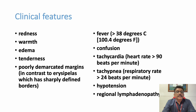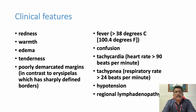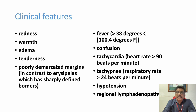Clinical features of cellulitis include redness, warmth, edema, tenderness, and poorly demarcated margins — in contrast to erysipelas, which has sharply defined borders. As infection spreads deeper, border demarcation becomes faint. Systemically, patients can have high-grade fever, confusion from toxic encephalopathy, tachycardia, tachypnea, lactic acidosis, hypotension, and regional lymphadenopathy — inguinal for lower limb, axillary for upper limb involvement.